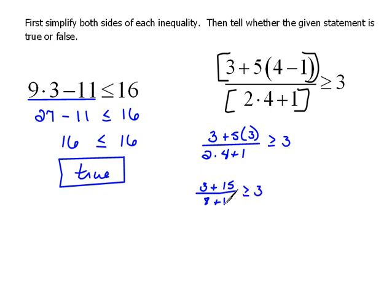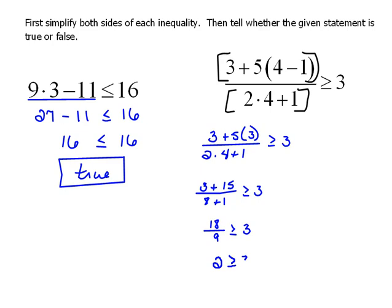Now we're down to just addition. So 3 plus 15 is 18, over 8 plus 1 which is 9, greater than or equal to 3. Now we can do the division: 18 divided by 9 is 2, greater than or equal to 3.